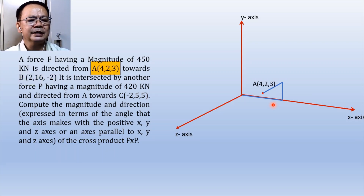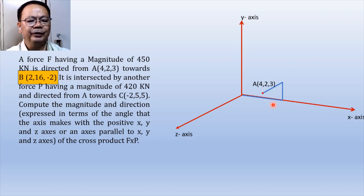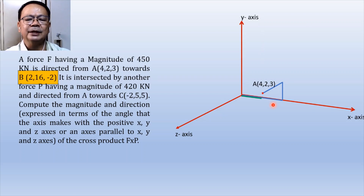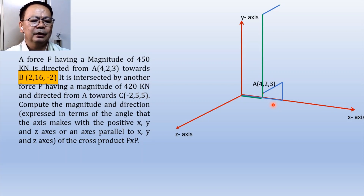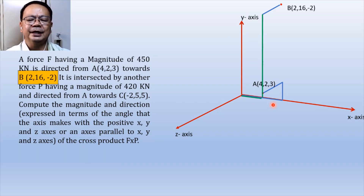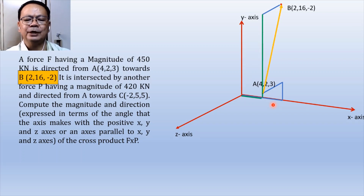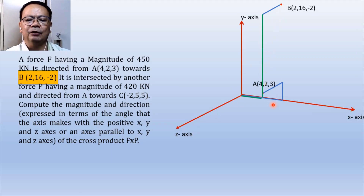Point B, which is at (2, 16, -2), can be located by moving 2 towards the positive x axis, 16 towards the positive y axis, and negative 2 towards the negative z axis, so that the end of that will indicate the position of point B whose coordinate is at (2, 16, -2). From A towards B there is a force F having a magnitude of 450 kN.